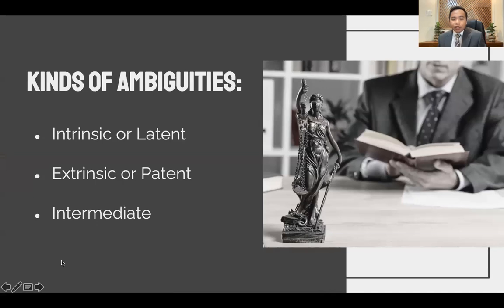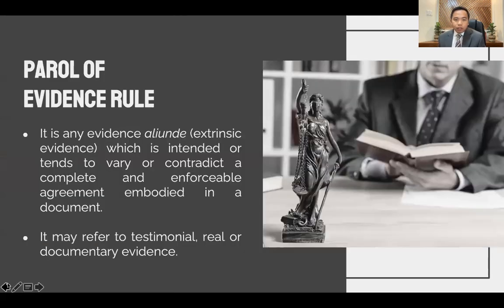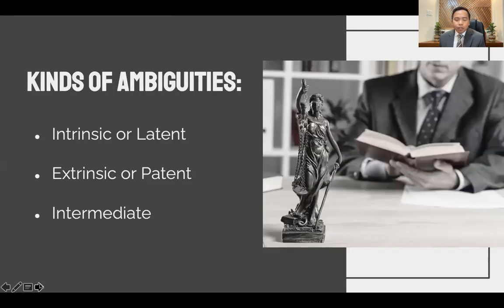What are the different kinds of ambiguities under the Parol Evidence Rule? Under the Parol Evidence Rule, extrinsic evidence — evidence outside a written agreement — cannot be admitted except the written agreement itself. There are three different kinds of ambiguities: first is intrinsic or latent; second is extrinsic or patent; and third, intermediate.